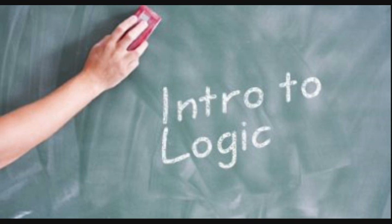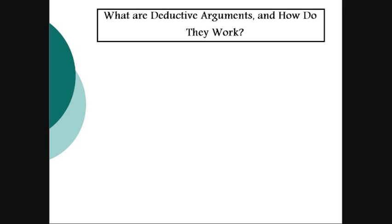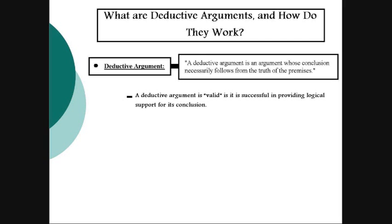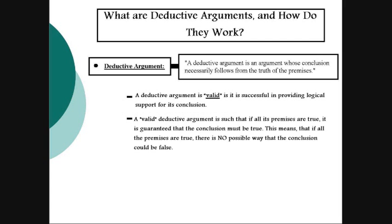Let's move on to deductive arguments, and then we'll move on to inductive arguments. What are deductive arguments and how do they work? A deductive argument is an argument whose conclusion necessarily follows from the truth of the premises. We say that a deductive argument is valid if it is successful in providing logical support for its conclusion. A valid deductive argument is such that if all the premises are true, it is guaranteed that the conclusion must also be true.